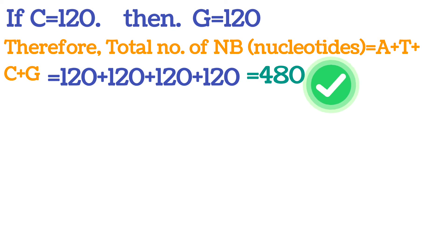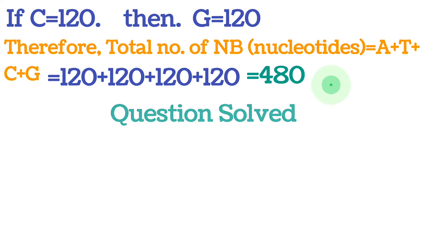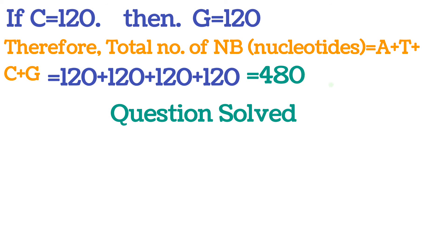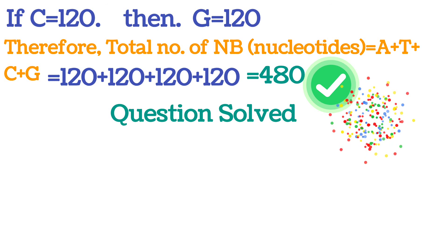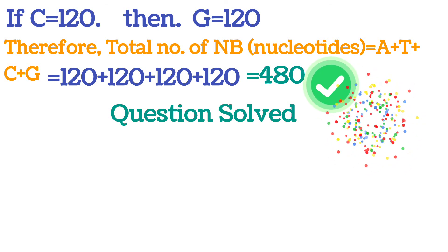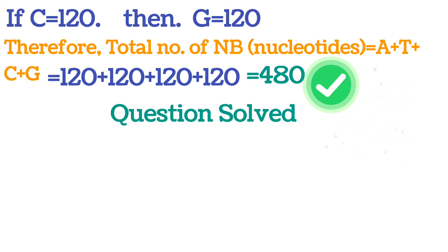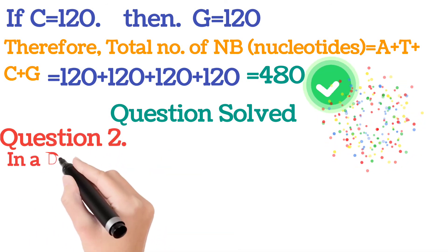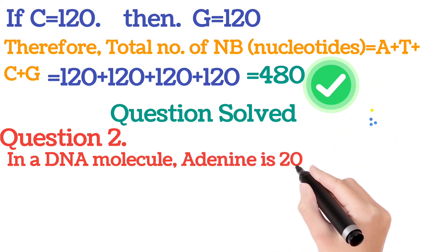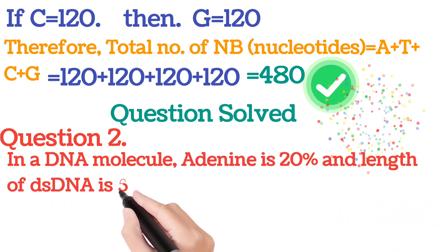So the total number of nitrogenous bases present in the DNA molecule is 480. The key point is that the number of nitrogenous bases equals the number of nucleotides in a DNA molecule. Therefore, if there are 480 nitrogenous bases, there are 480 nucleotides. Question one is solved — you used Chargaff's rule: A = T and C = G. Now let's see question number two.